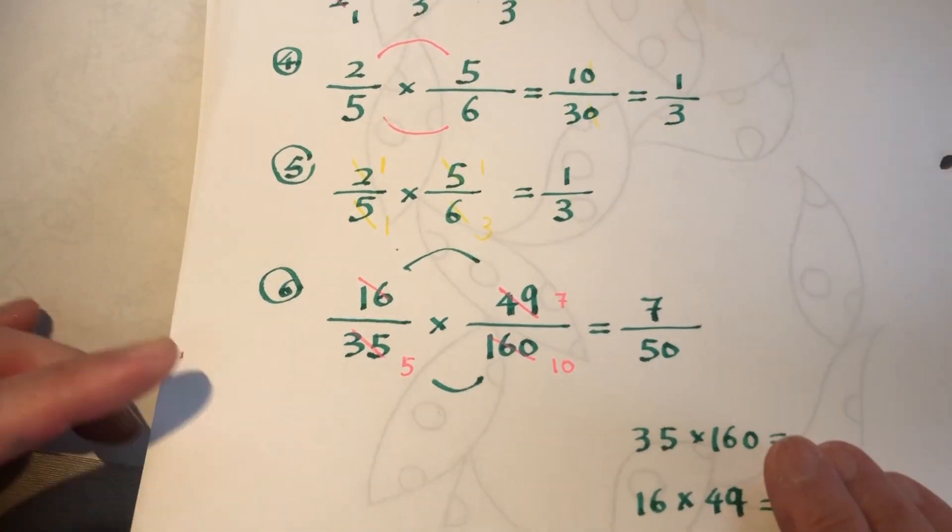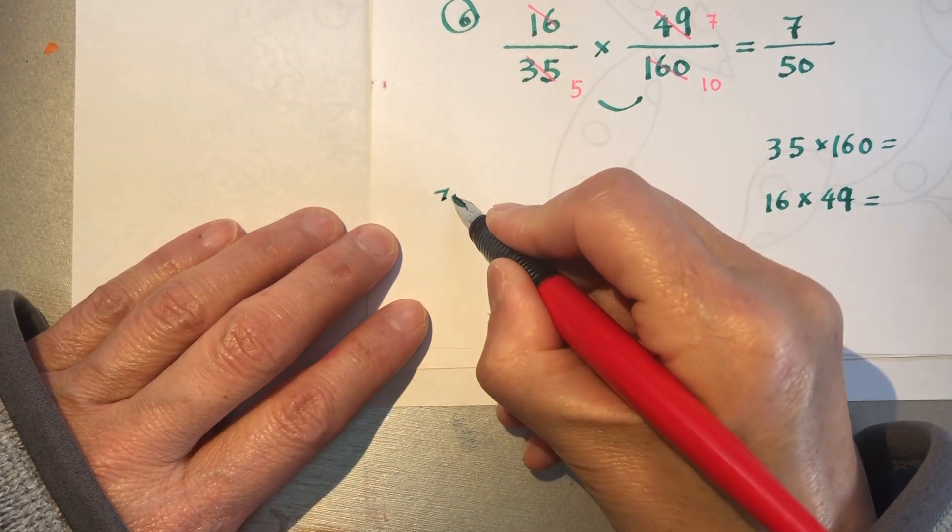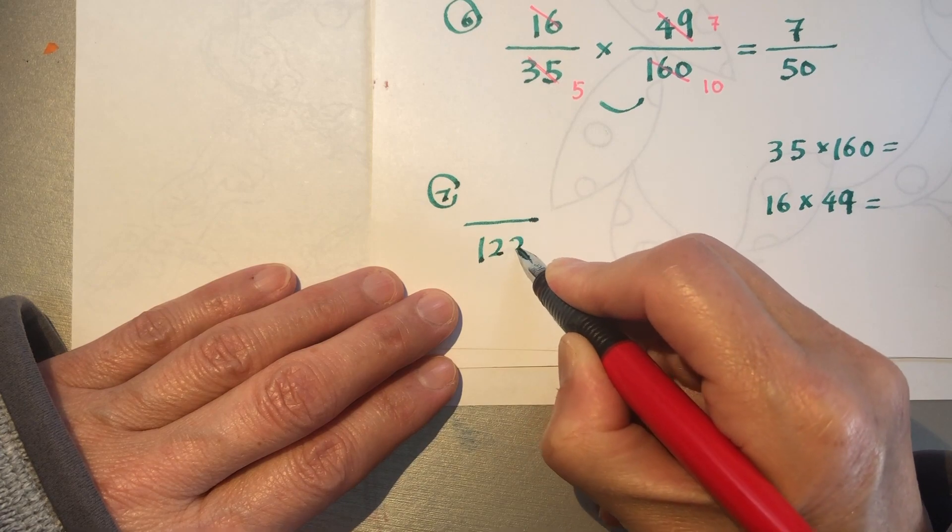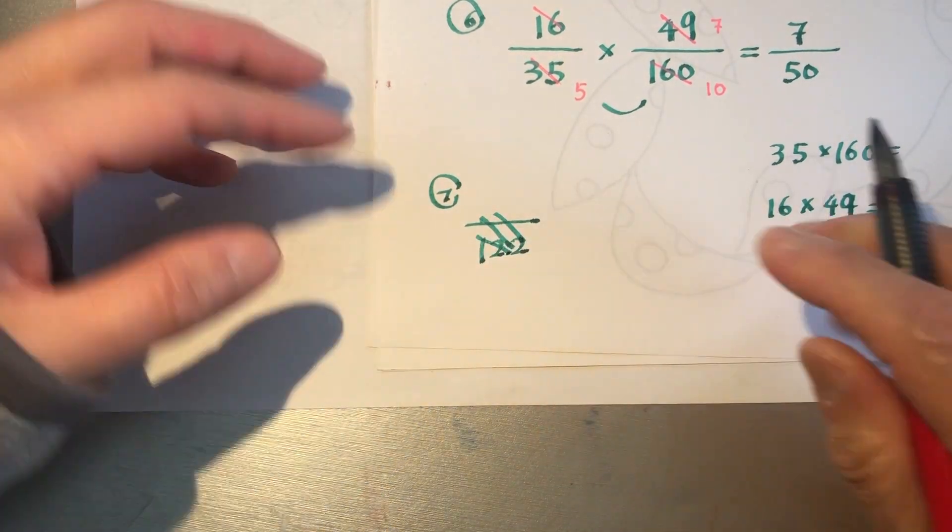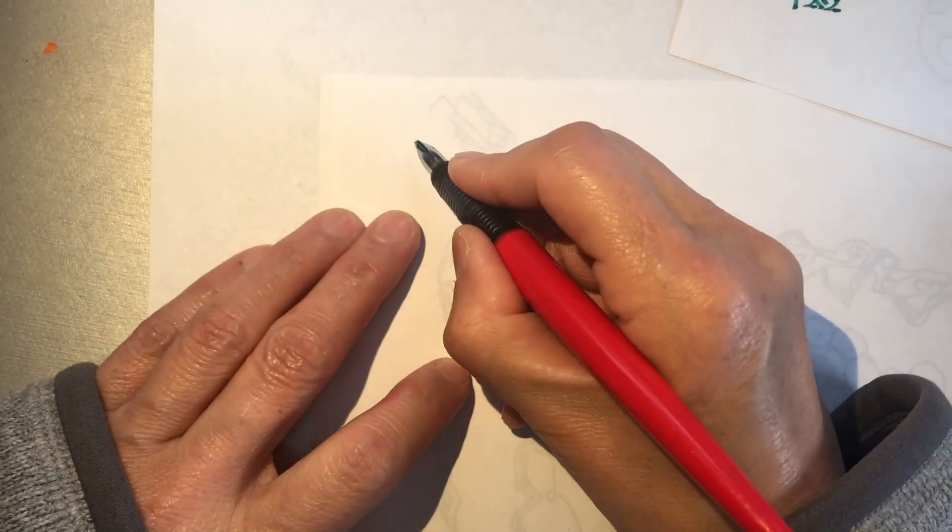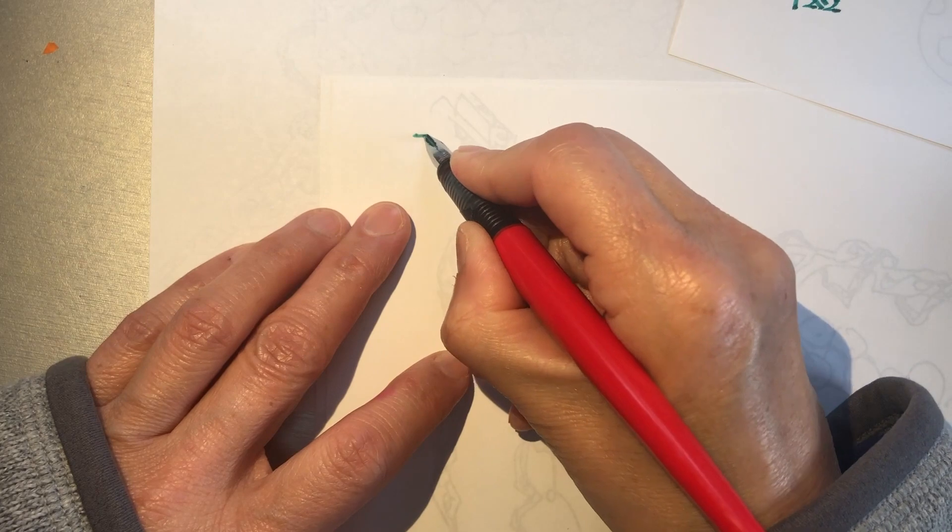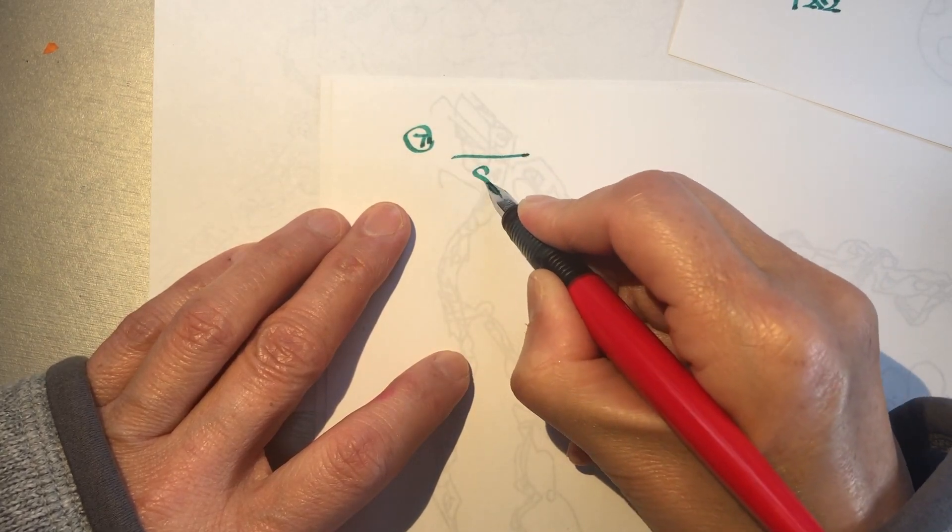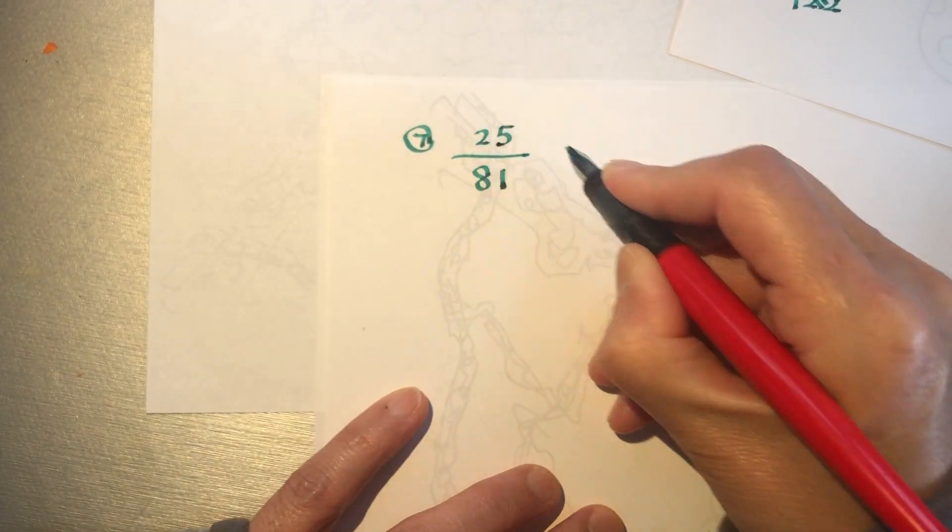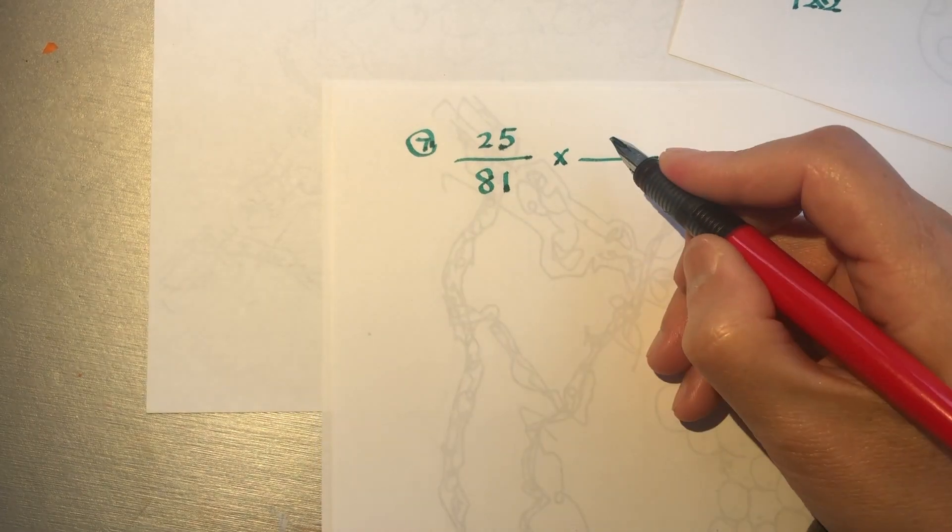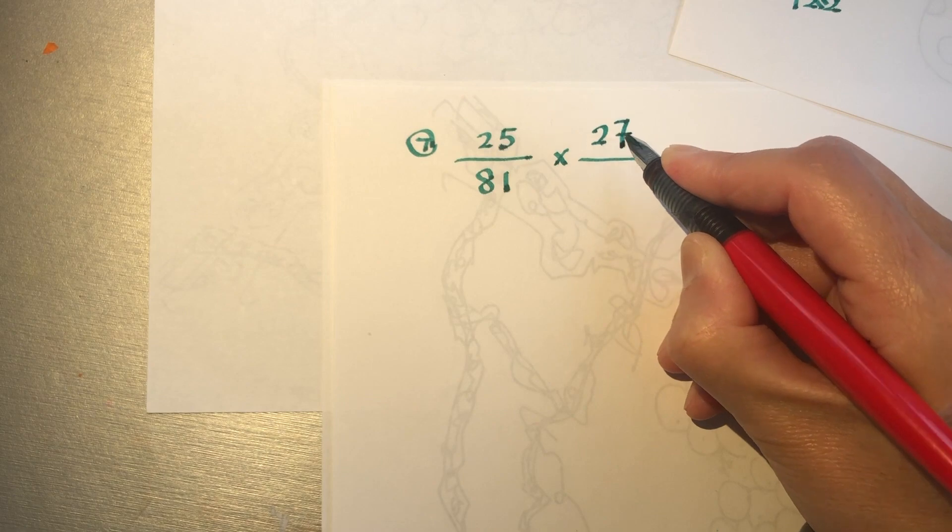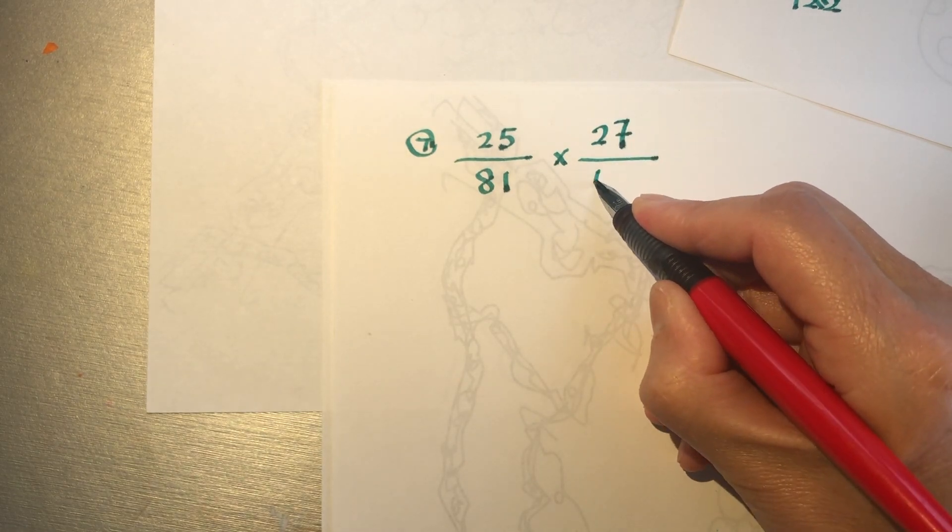Okay, now we do the last one. Question number 7. 122... no, no, it's a little bit too big. 121, I was trying. Okay. Number 7: 81 as a bottom and on top is 25, times 27 over 50.